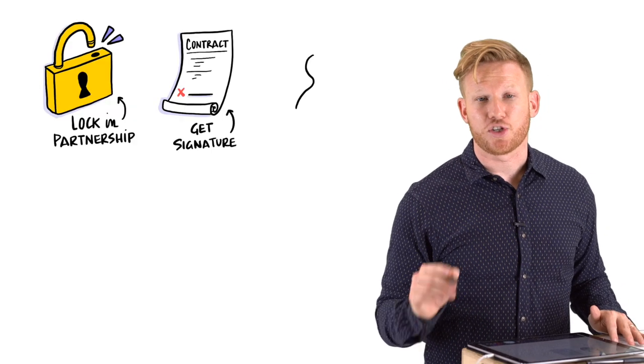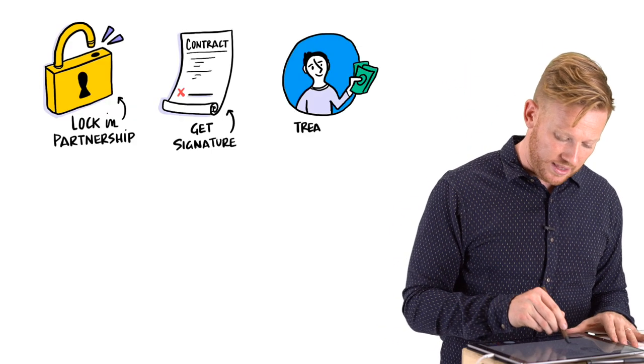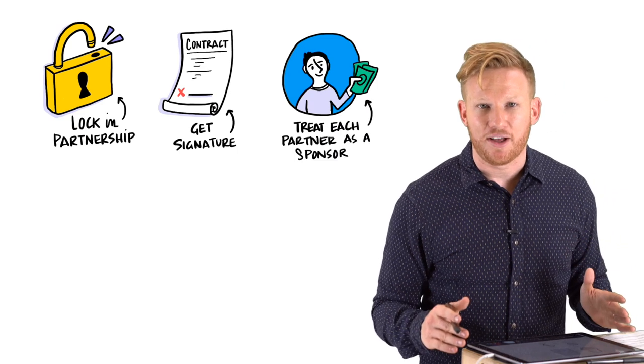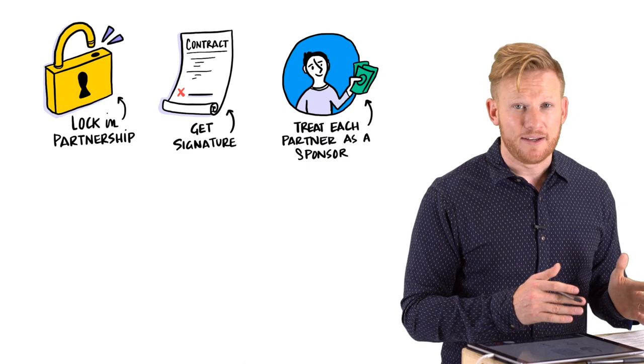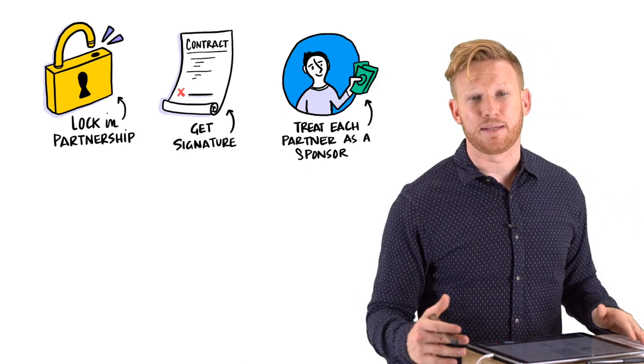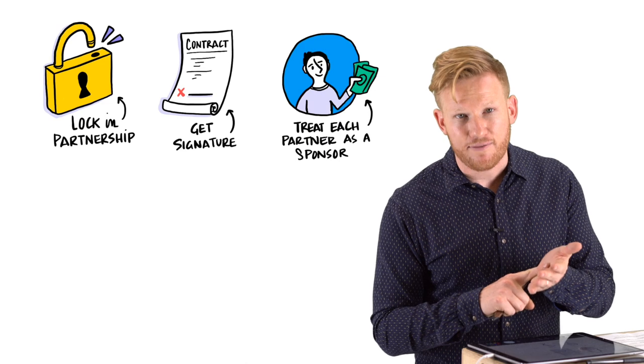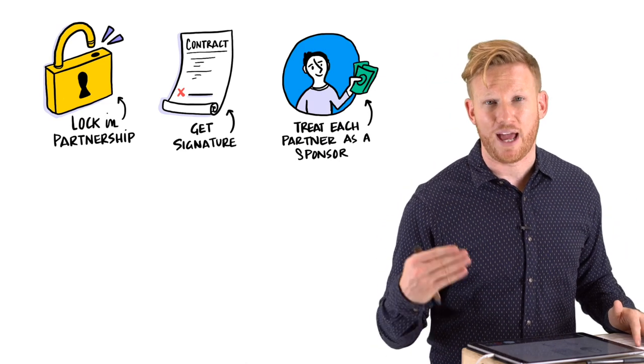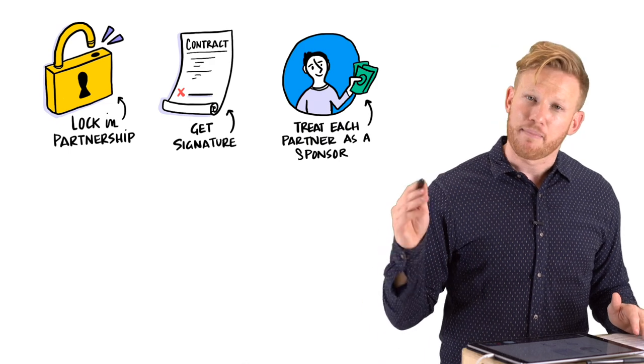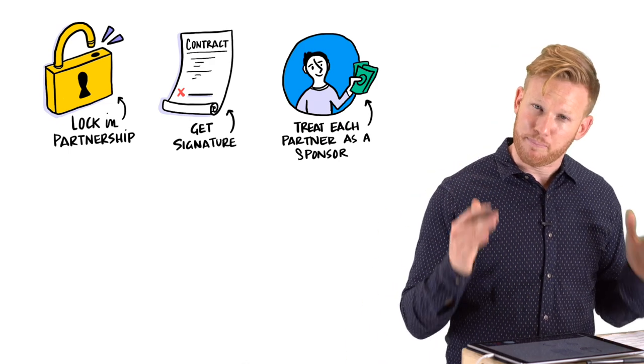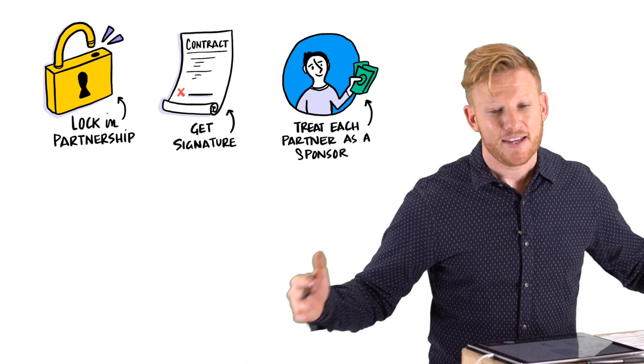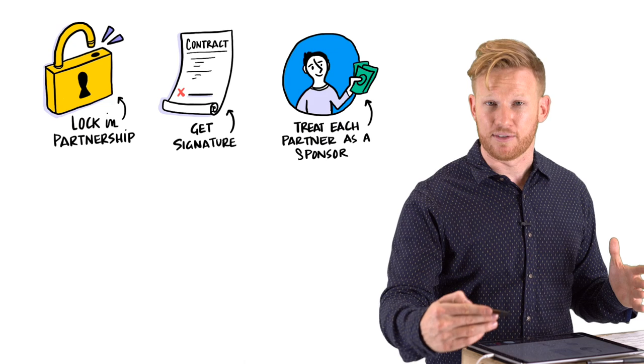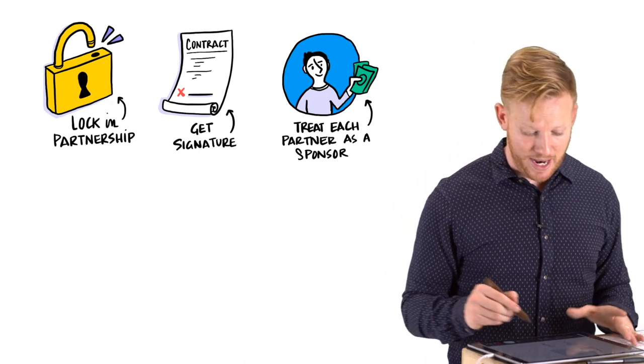The next step to locking it in is to treat every partner really like a sponsor, like a paying sponsor. These people, whether or not they're adding value or they're giving you money, you need to treat them as if they are really paid to be part of this event. That means consistent follow-up emails. That means being attentive to their needs. That means sending them a really beautiful recap report after the event. I find that if I treat my partners like sponsors and I really kind of put that in my brain and the brains of the people on my team, I get a lot more out of that partnership. They end up kind of coming to the table and really delivering the value that I originally expected.